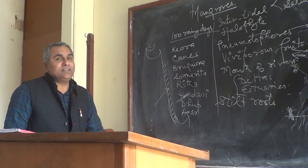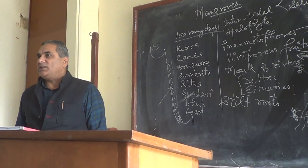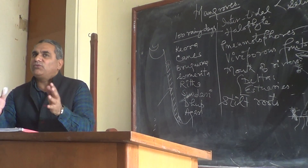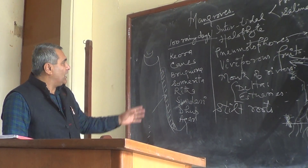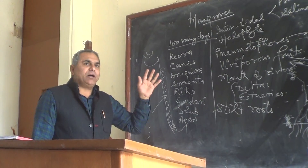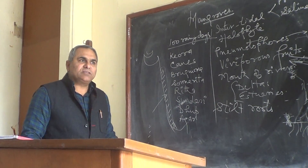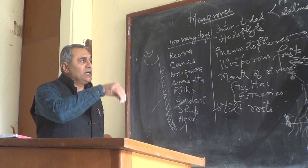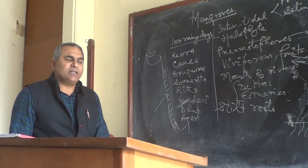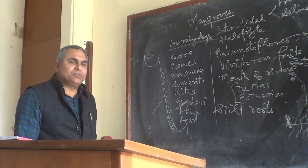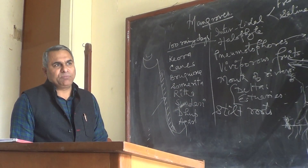These are different types of trees commonly found in the coastal region and in the mouths of rivers and estuaries. In India, we basically have the Sundarbans — and on the mouth of every river.